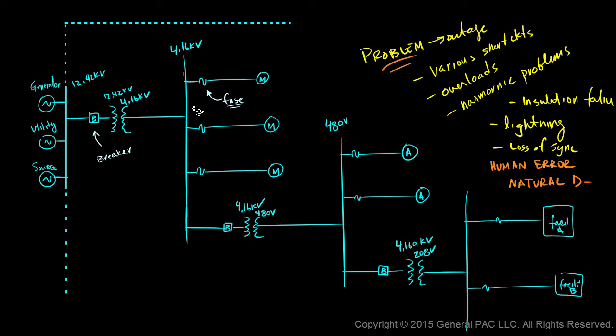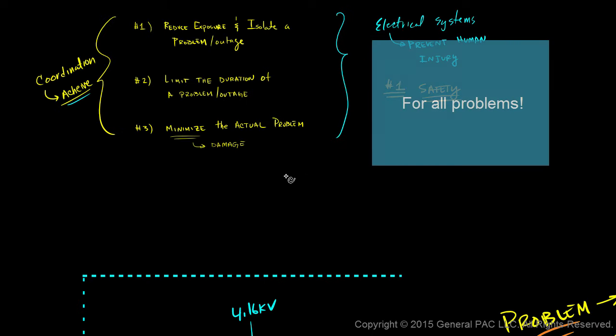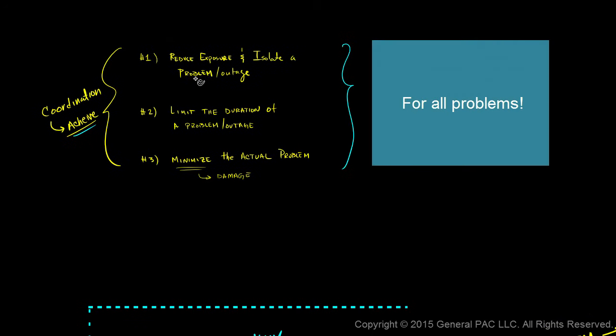In our protection coordination, it's supposed to do these three things. It's supposed to reduce the exposure and isolate the problem. It's supposed to limit the duration of the problem. And it's supposed to actually minimize the actual problem so the damage is minimum.